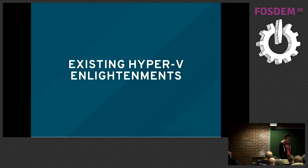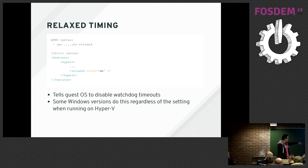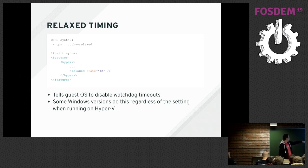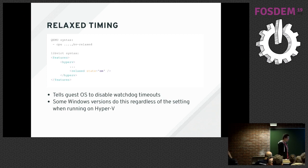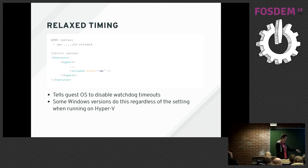What features do we have in KVM and what are they needed for? I'll show you both QEMU syntax and libvirt syntax for enabling each feature. The first one is called relaxed timing, enabled by 'hv-relaxed' in QEMU. It basically tells Windows that it's running virtualized, so it should disable hard watchdogs on different events, because different operations can take different amounts of time when virtualized and your Windows can crash otherwise. Most modern Windows versions detect the hypervisor CPU flag and enable this automatically, but for all Windows versions it makes sense to enable it.